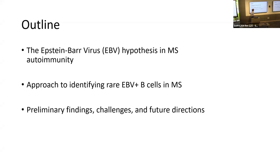The outline for today: three things I'm going to talk about — the Epstein-Barr virus hypothesis and MS autoimmunity, our method to try to identify rare EBV-positive B cells from patients with MS, and lastly some preliminary findings, some challenges, and some future directions.